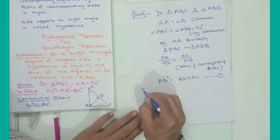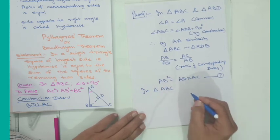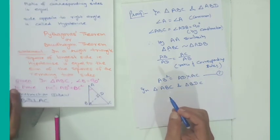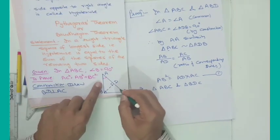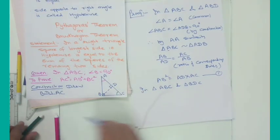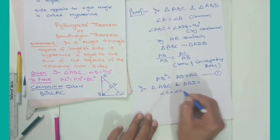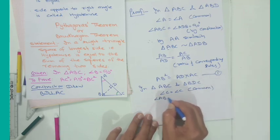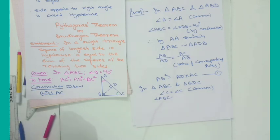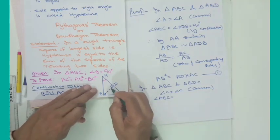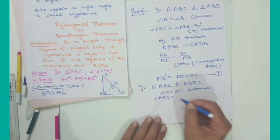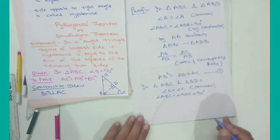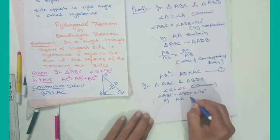Now again taking the larger triangle ABC and triangle BDC, we observe that angle C is common in both triangles. Also, angle ABC is 90 degrees in the larger triangle, and angle BDC — marked here in green ink — is also 90 degrees, by construction. So by angle-angle similarity: